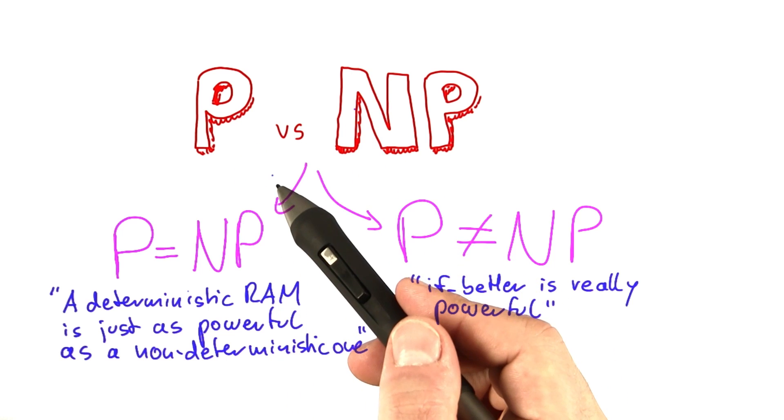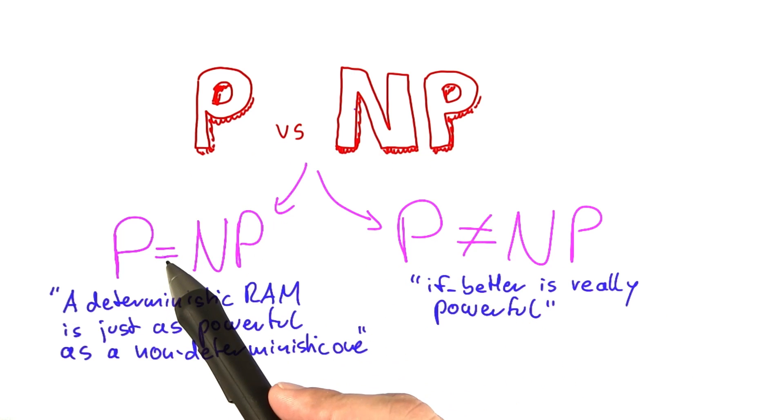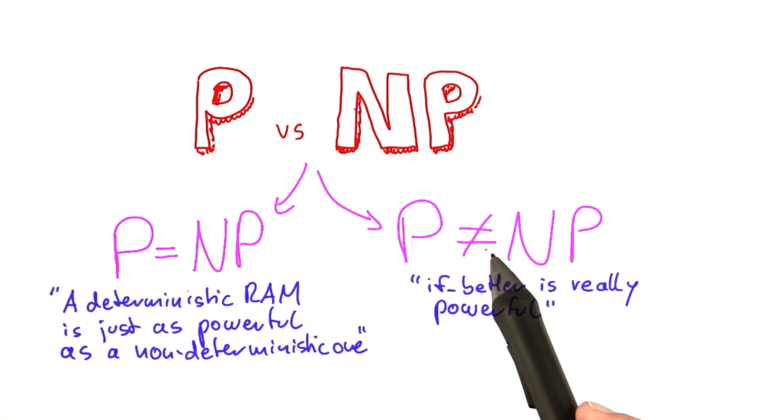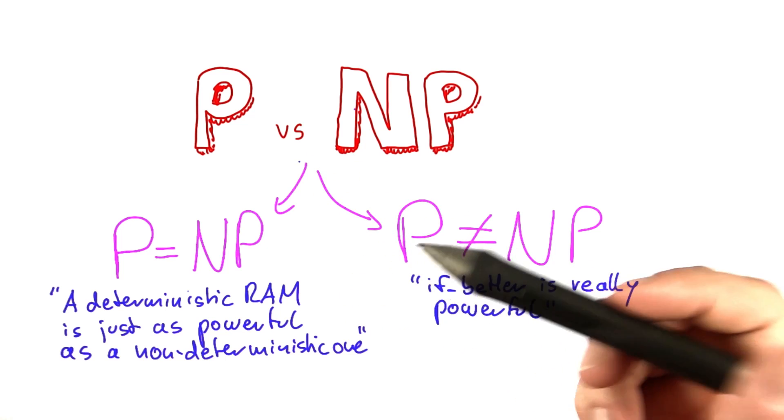Because the thing is, we don't know. Nobody knows. This question—whether P equals NP or P does not equal NP—is a problem that is decades old, and yet nobody has been able to figure it out.